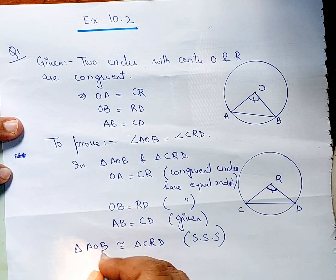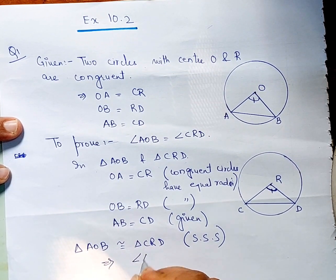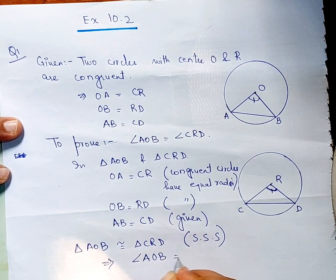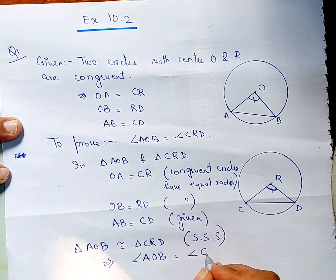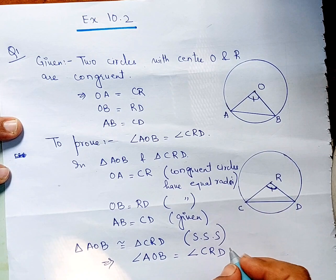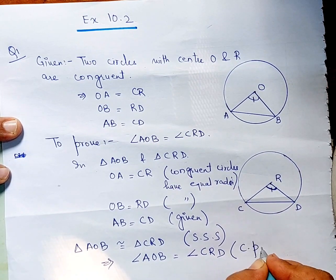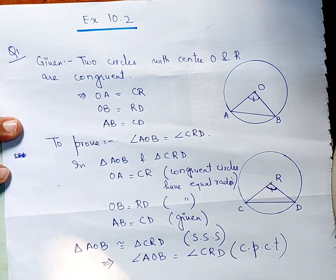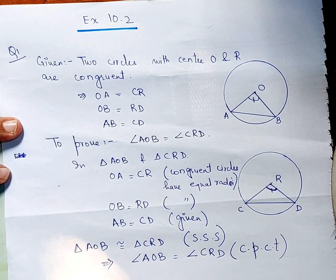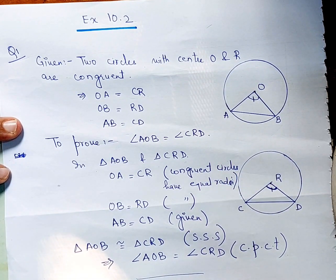If the triangles are congruent, what happens? Angle AOB is equal to angle CRD. Okay, this will be by CPCT. It is part of a congruent triangle. So this is your angle. Okay, clear. This is complete.